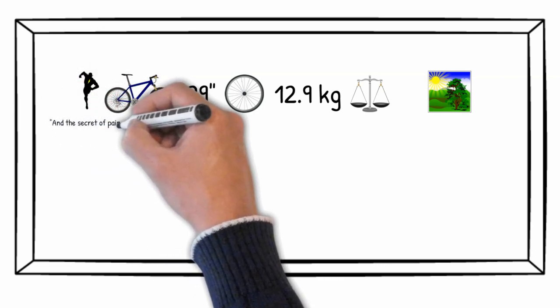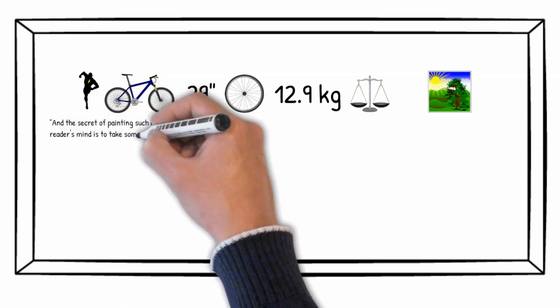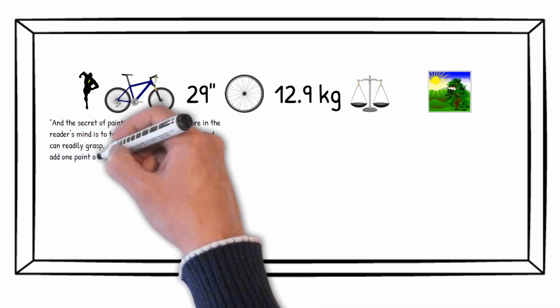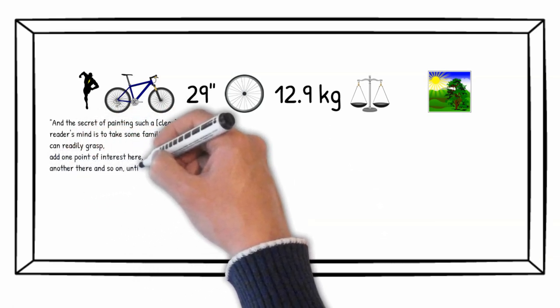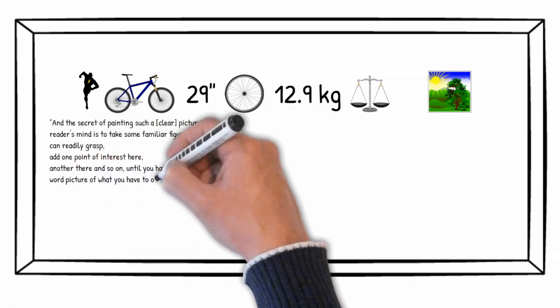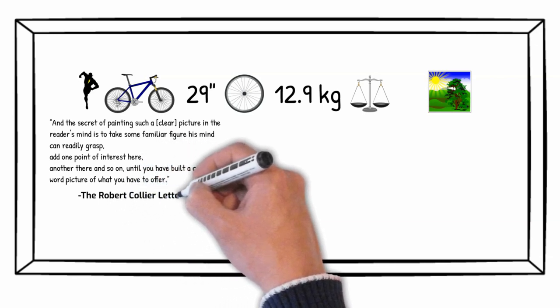Here is what Robert says on the matter. And the secret of painting such a picture in the reader's mind is to take some familiar figure his mind can readily grasp, add one point of interest here, another there, and so on, until you have built a complete world picture of what you have to offer. The Robert Collier letterbook, page 28.